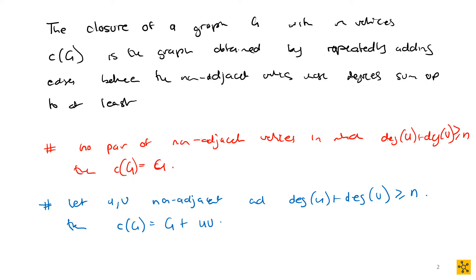So again, the closure of a graph is a recursive process — a graph obtained by repeatedly adding edges between non-adjacent vertices whose degrees sum up to at least n. When you have no pair of non-adjacent vertices whose degrees sum to greater than or equal to n, the closure is your current graph. If you have two non-adjacent vertices u and v where the degrees do add up to at least n, you add that edge and keep repeating until you reach that condition.